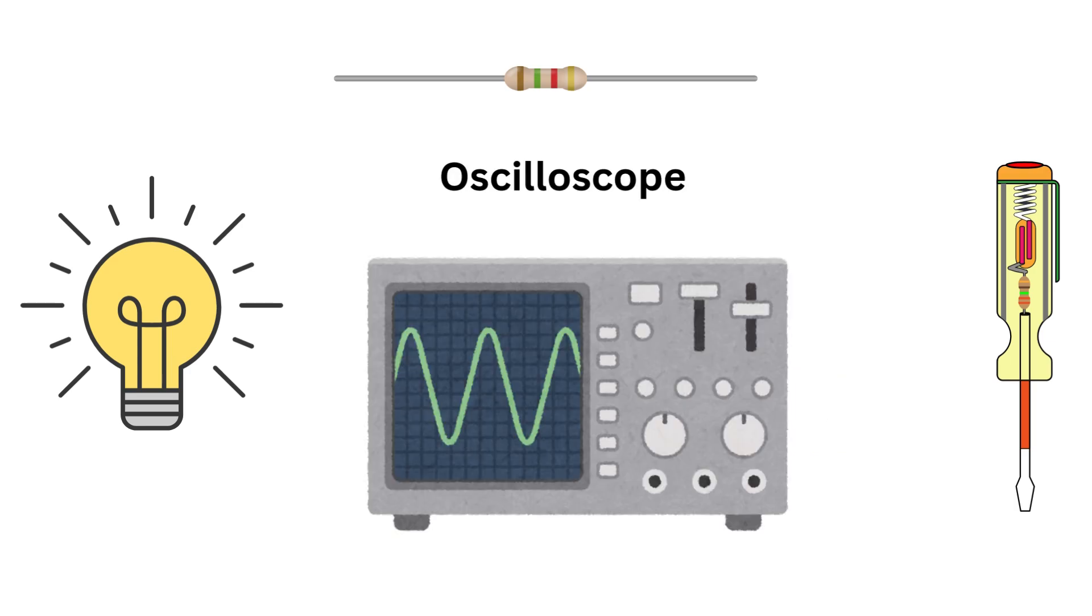Next we've got the oscilloscope. This device visualizes electrical signals as waveforms. It's crucial for analyzing signal behavior, checking frequencies, and ensuring everything's running smoothly in your circuits.